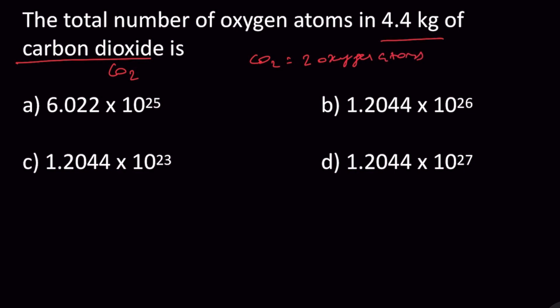Let's first find the number of moles of CO2 and then multiply that by two. We know that N₀, the number of molecules, is equal to the number of moles times Avogadro's number. Number of moles is mass divided by molar mass times Avogadro's number.